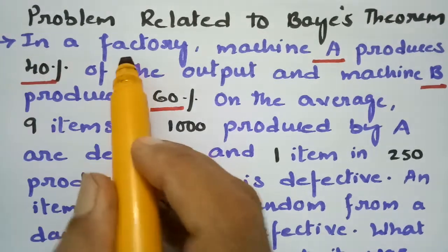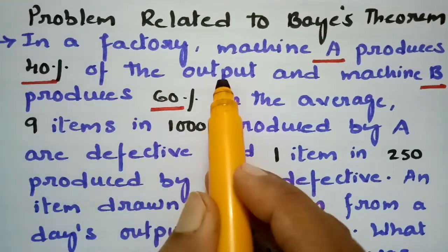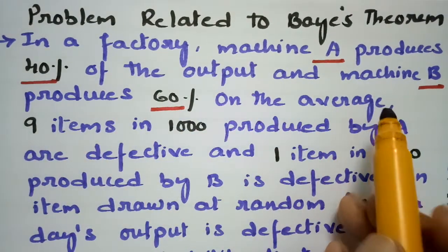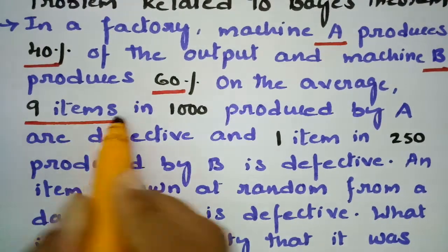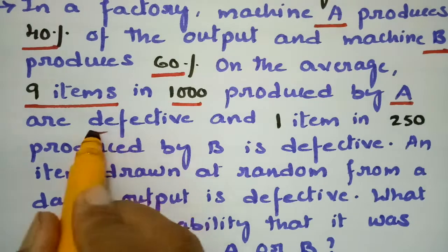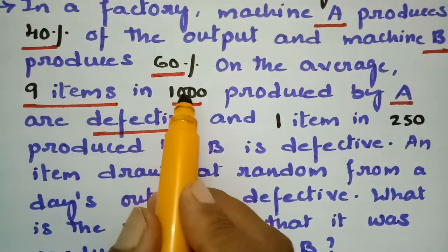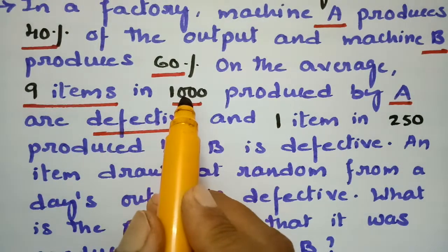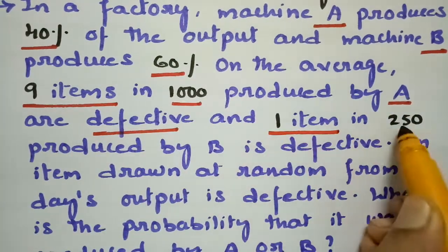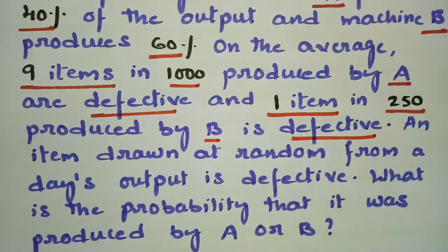In a factory, machine A produces 40 percent of the output and machine B produces 60 percent on the average. 9 items in 1000 produced by A are defective, and 1 item in 250 produced by B is defective.